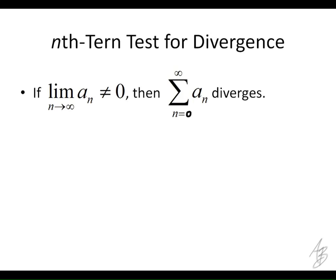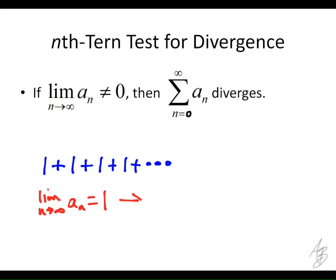To give a simple example: 1 plus 1 plus 1 plus 1 — does this converge or diverge? It diverges. In this particular series, the limit as n approaches infinity of a sub n equals 1, which is not equal to 0. So by the nth term test, it diverges. We're adding infinitely many finite terms that are not getting small, so it diverges.